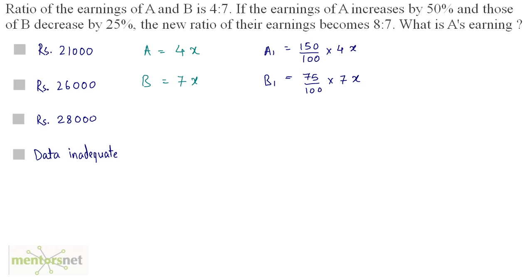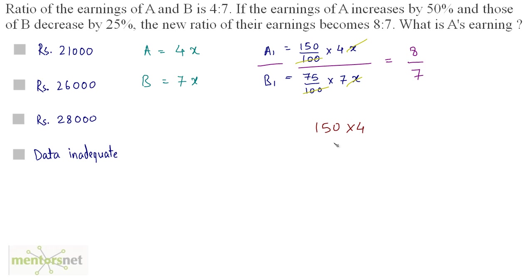The ratio of their new earnings is 8 by 7. So if I divide A1 by B1, it is equal to 8 by 7. The hundreds get cancelled out and x gets cancelled out. So what we have is 150 times 4 by 75 times 7 is equal to 8 by 7.